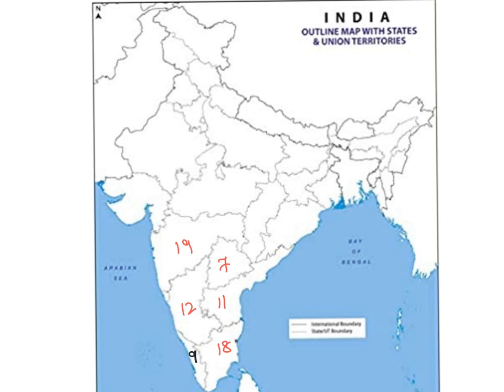Similarly, Madhya Pradesh also has 11 seats allocated. The state adjacent to Madhya Pradesh is Gujarat, and the same 11 seats are allocated to Gujarat as well. If you subtract 1 from 11 it will become 10, so 10 seats are allocated to Rajasthan.